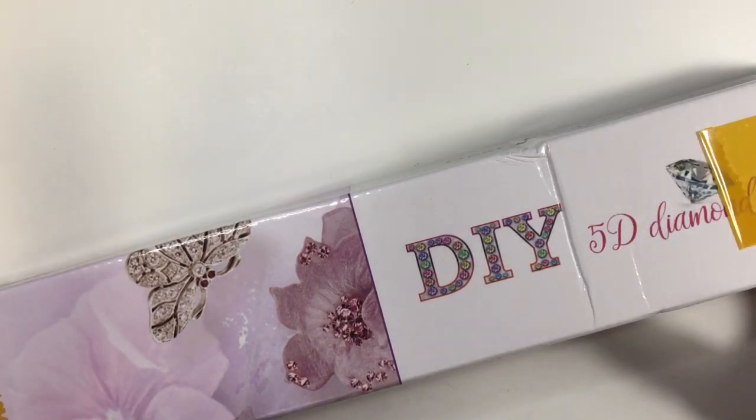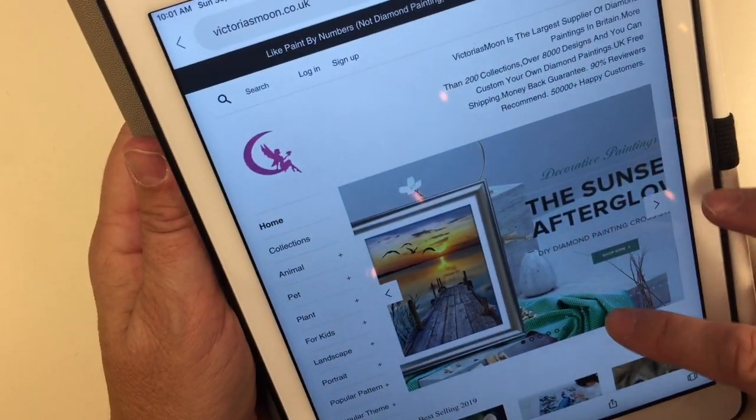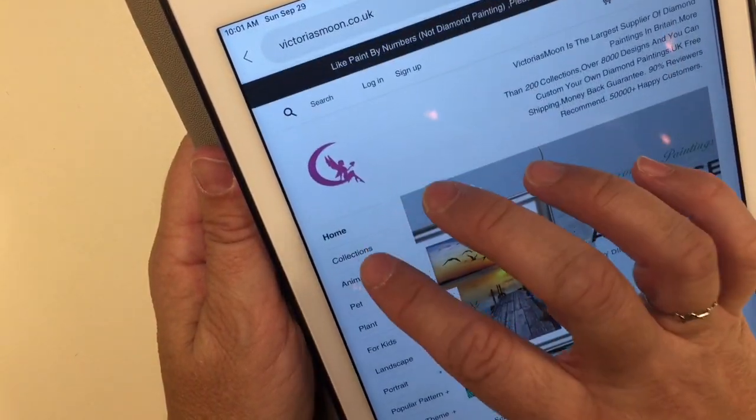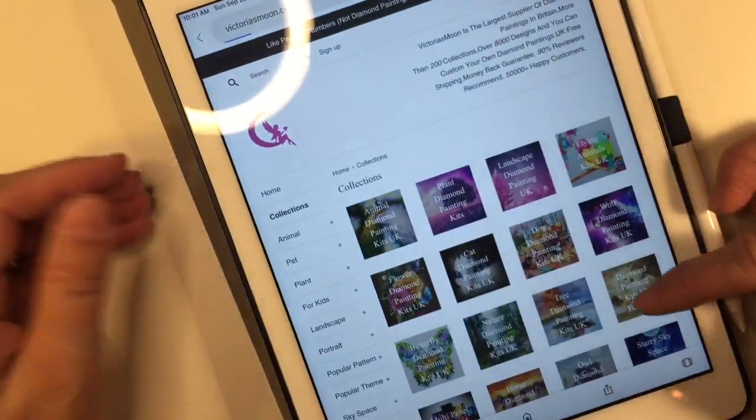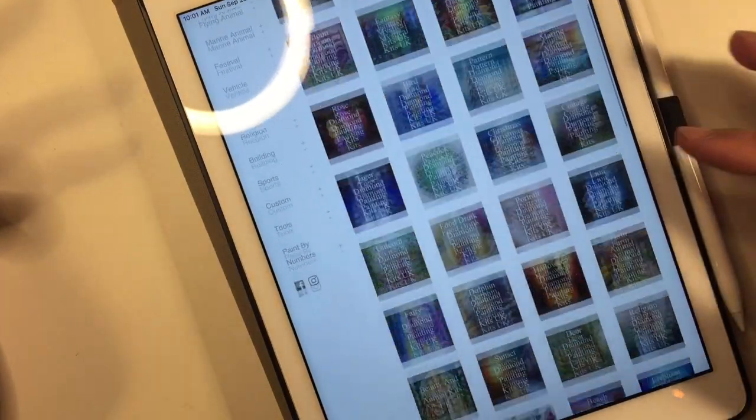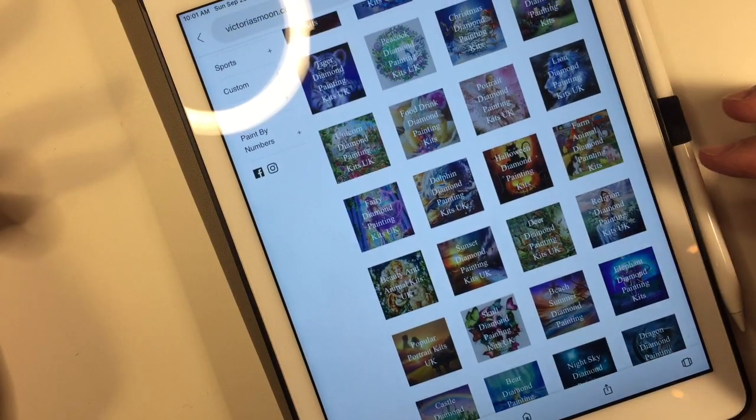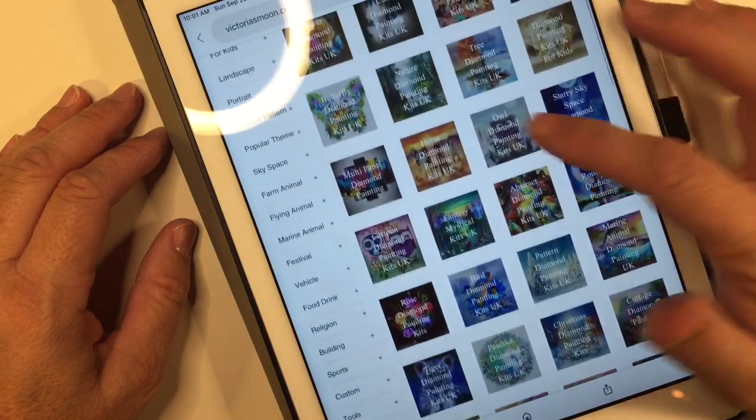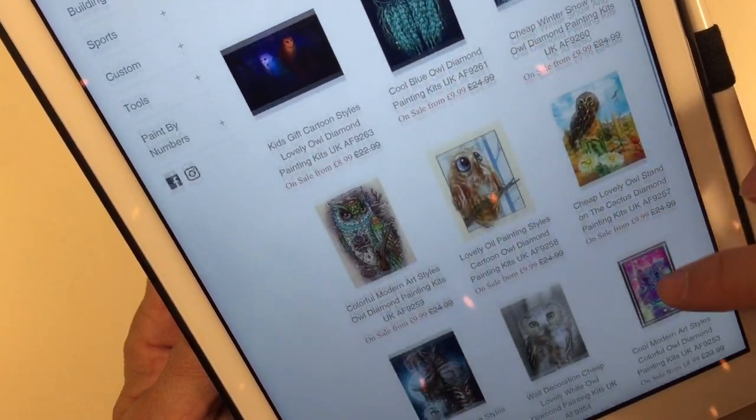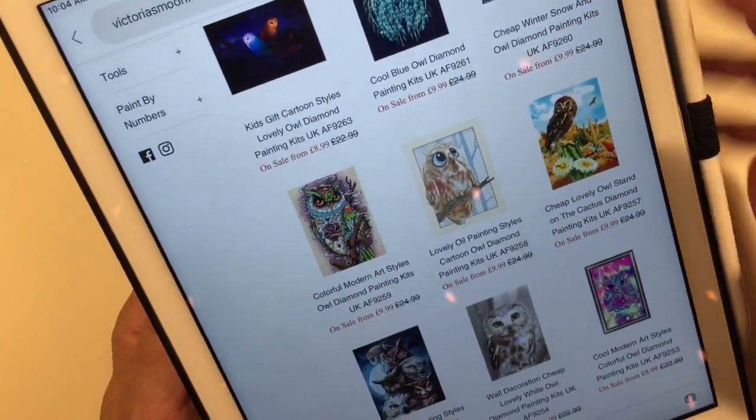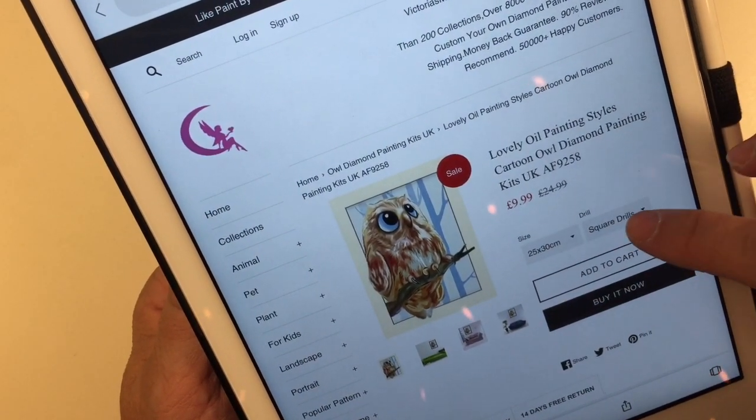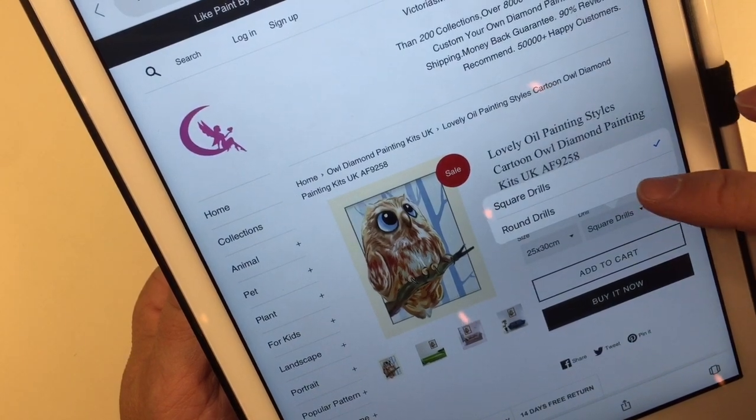If you use the discount code you receive 10% off and it's unlimited, you can use it multiple times. I'll show you their website here, they are in the UK and there are a ton of pictures. Whatever you are looking for they have - there's dogs, trees, owls, waterfalls, whatever you are interested in. Let's find an owl and click on it. You can order your different size and you can get square drills or round drills.